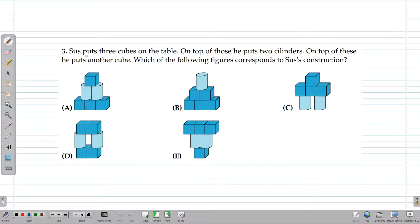The first thing that Sus did is he puts 3 cubes on the table. In figure A, we can see that there are 3 cubes at the bottom, so this could be a possible answer. In figure B, there are also 3 cubes at the bottom, so this could also be an answer. But in figure C, D and E, there aren't 3 cubes at the bottom, so these could not be an answer.